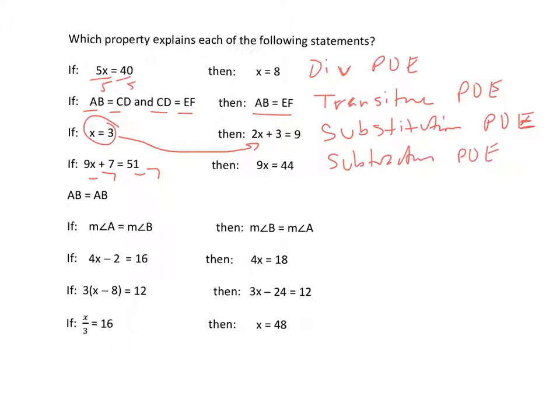AB equals AB. This is just we should know as the reflexive property of equality. And think like reflection. Like if you're looking in the mirror, you see the same thing. Might be a way to remember reflexive.